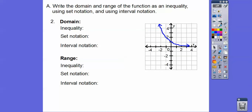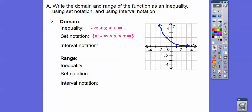Now here's an exponential graph. Remember, domain is how much the graph goes left and right. It goes to the left forever and to the right forever — negative infinity and positive infinity. X is between negative infinity and positive infinity. You never put an equals sign on infinities because you can never actually reach them; you just keep going. So in set notation, x is all real numbers, and in interval notation it's written with parentheses next to the infinities. You can just say all real numbers.